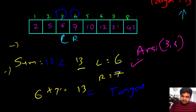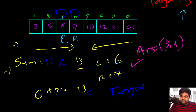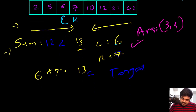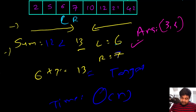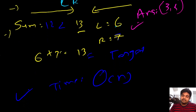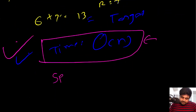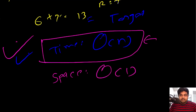The benefit of the two-pointer approach is that we compute everything in a single iteration without repetitive work. The time complexity is O(n), which is a much better improvement compared to both brute force and binary search approaches. The space complexity is O(1) because we are not using any additional space apart from storing a couple of variables. Now let's move on to the coding.